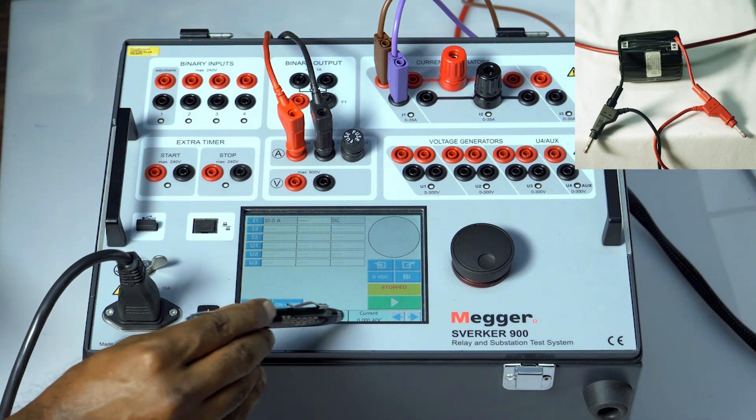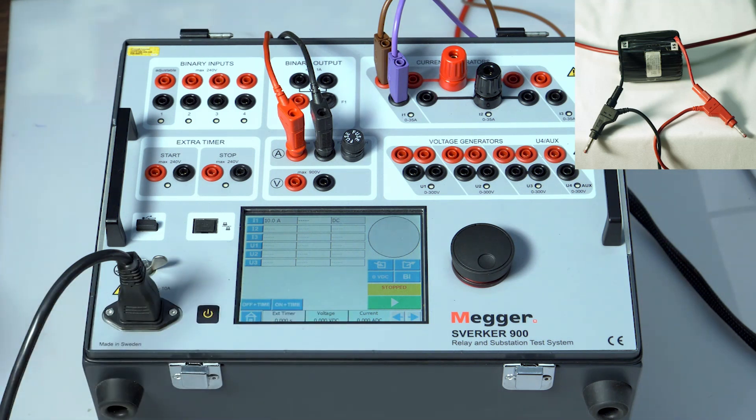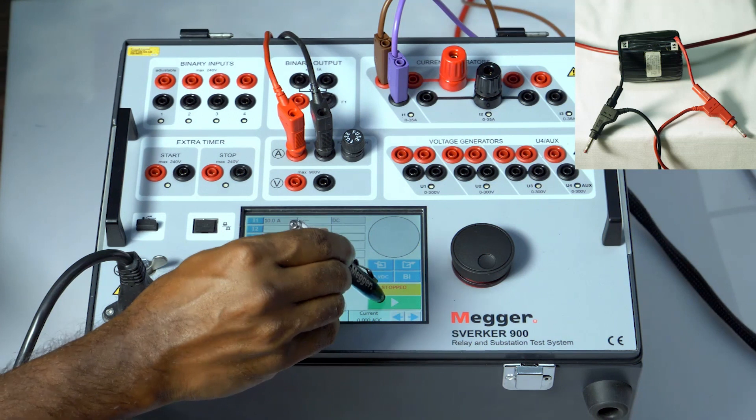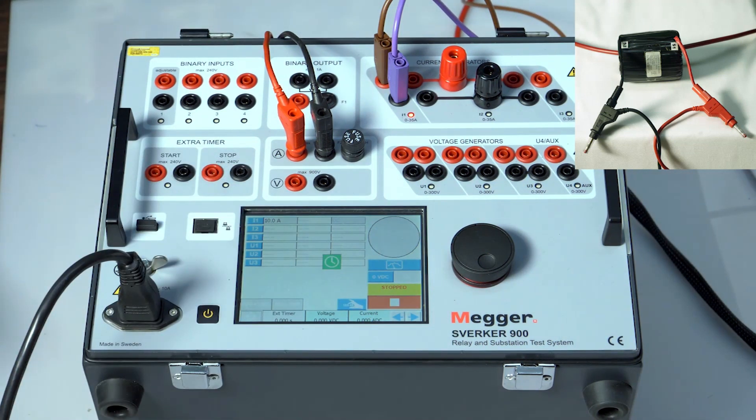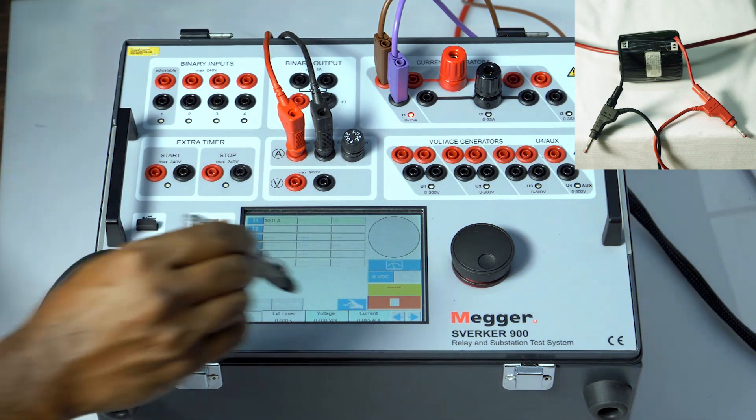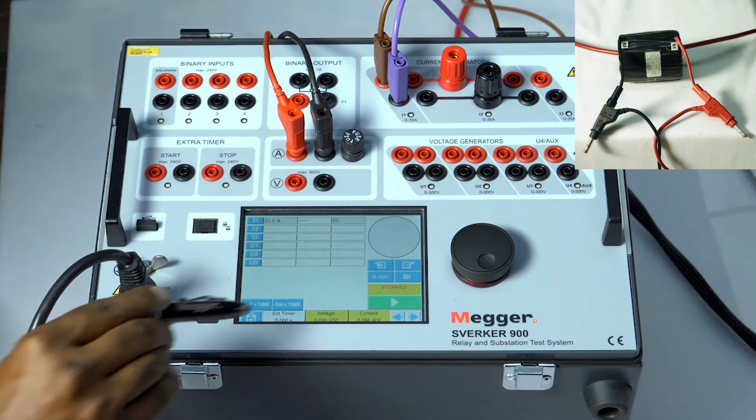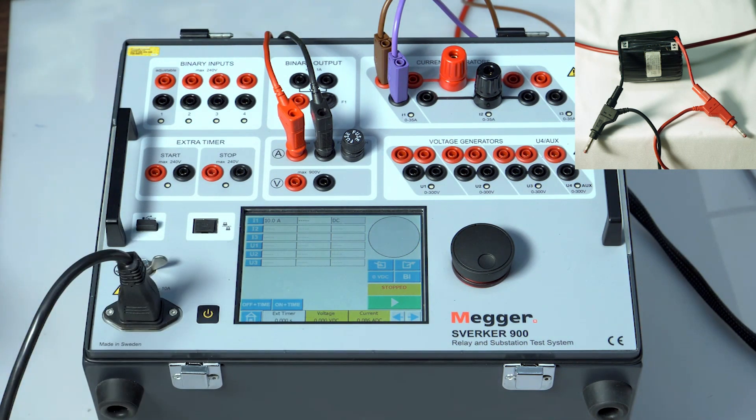Inject the current for approximately one second and switch off. The one second is to ensure that the value gets stable in the ammeter. So let me inject. Stop. You can see the value as 0.086 and it's positive.